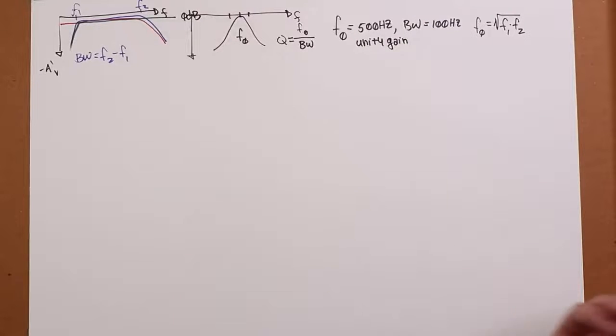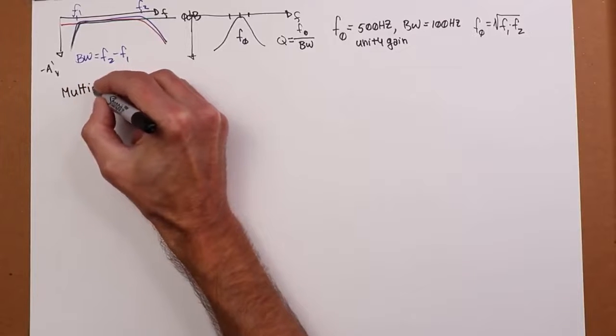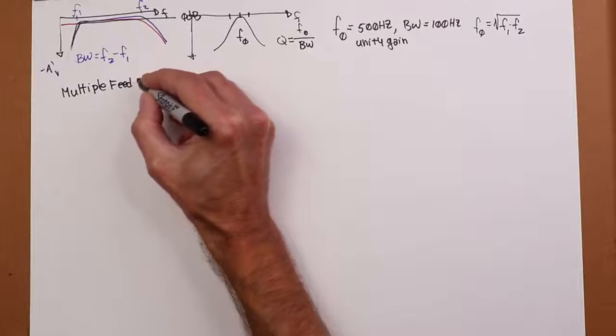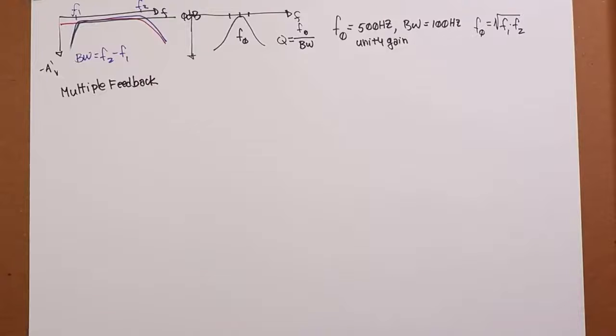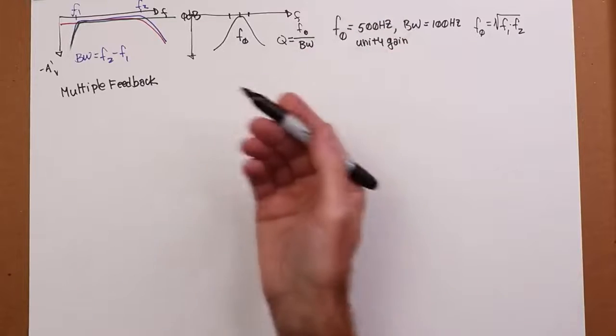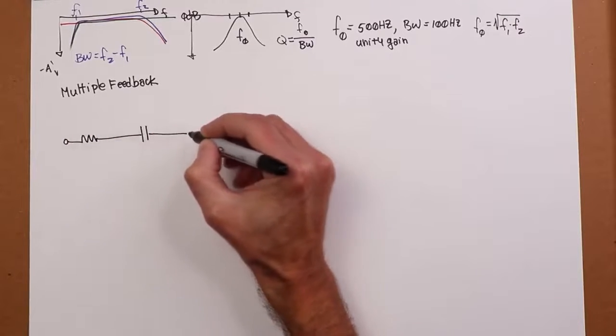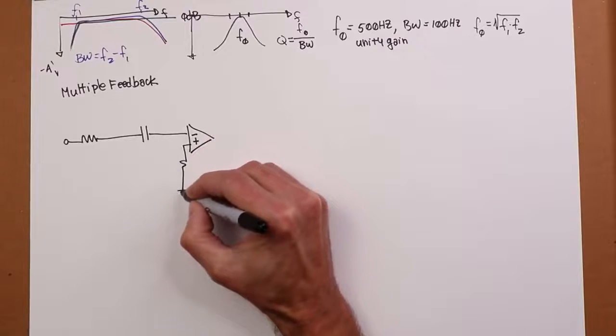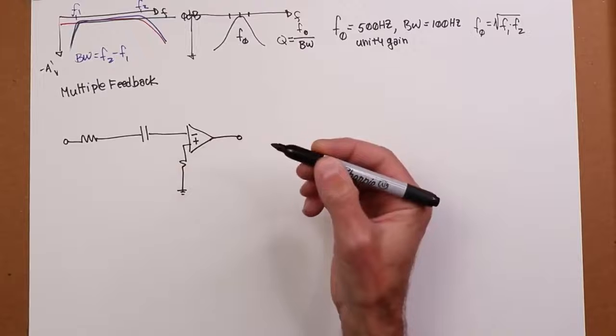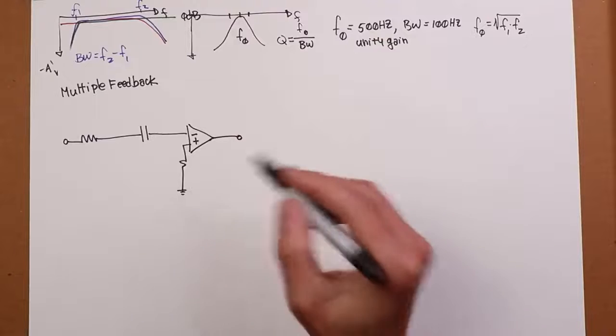So what I'm going to do is find a template for this. There is a template in the text called a multiple feedback filter. As a matter of fact, there's two of them. One of them is a unity gain version, and the other is not. So the non-unity gain version will produce a gain depending on what your Q is. What does the template look like? The template looks like this. Now this is essentially based, the core of this is on an inverting amplifier.